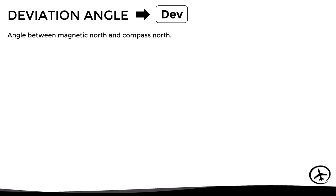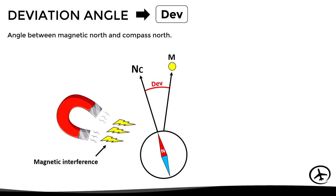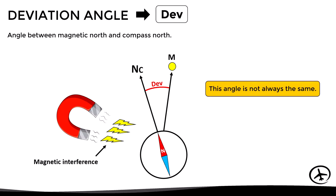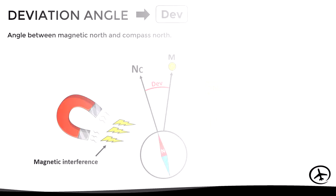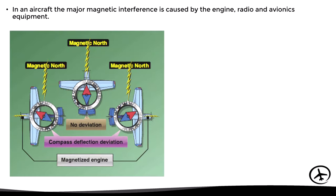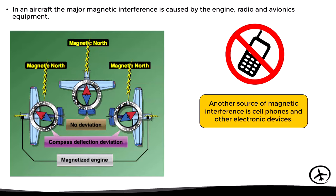To correct compass deviation we use the concept of the deviation angle — the angle between magnetic north and compass north, in other words the angle between magnetic north and where the compass is actually pointing. This angle is not always the same; it depends on each aircraft, the magnitude of magnetic interference present, and the heading. The major magnetic interference in an aircraft is caused by the engine and avionics equipment, so compass deviation depends on their position in relation to magnetic north. The interference from aircraft components can be measured and corrected for each heading.